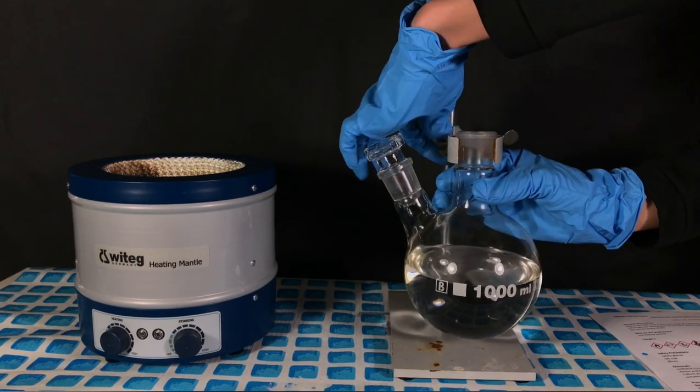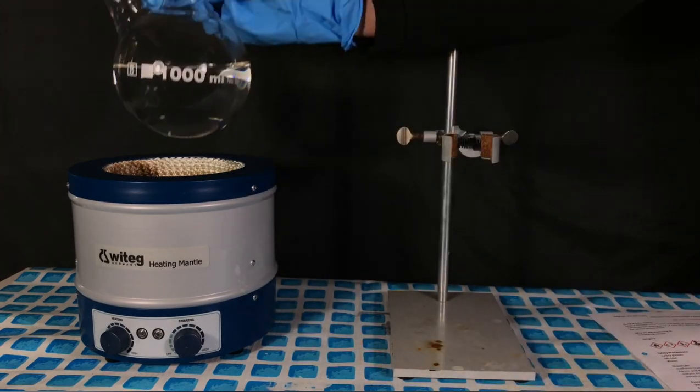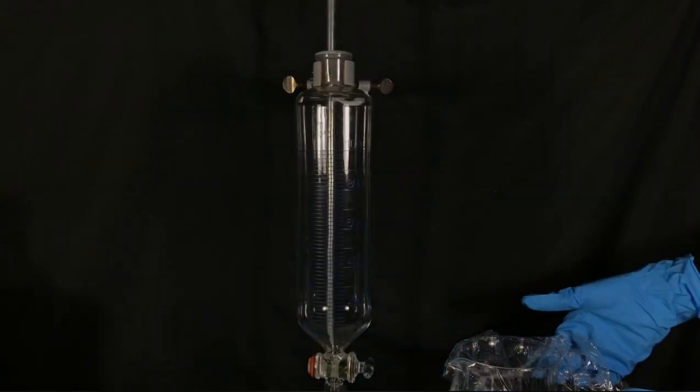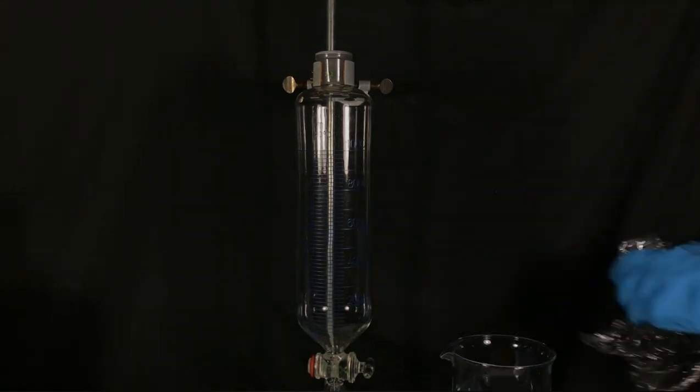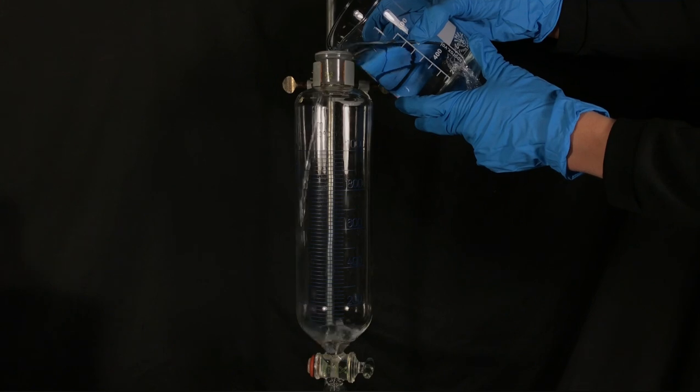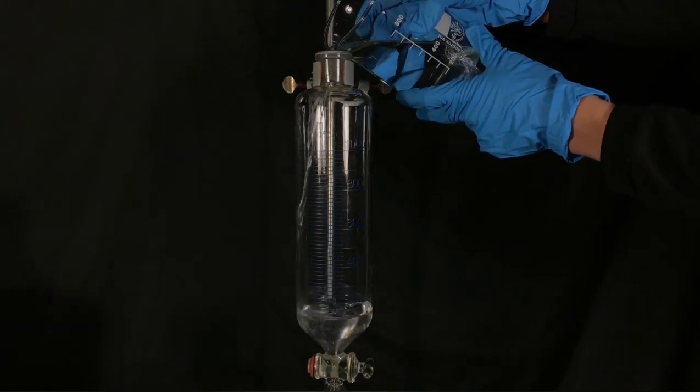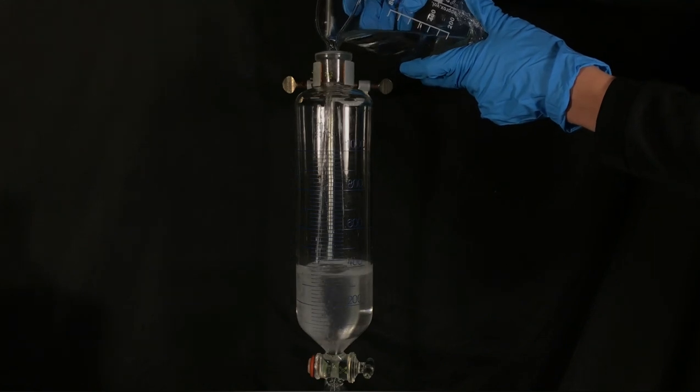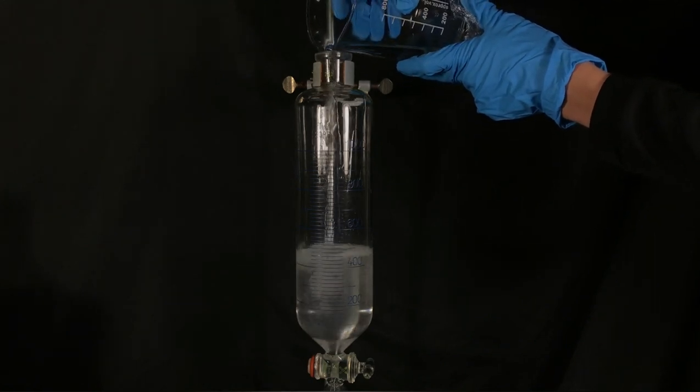The fun can now begin. The 1 liter round bottom flask containing the formic acid was transferred to a heating mantle. Normally I would have added all the sulfuric acid methanol mixture to the round bottom flask, but it was too small. Therefore I searched for the largest addition funnel I could find and transferred the solution to this addition funnel.